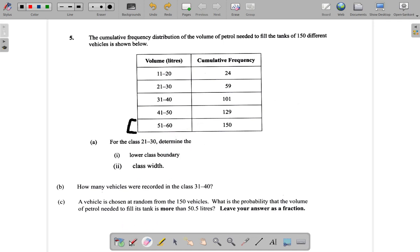Now, therefore, what it's saying then is that the vehicles with volume of petrol more than the 50.5 litres, all of them fall in the 51 to 60.